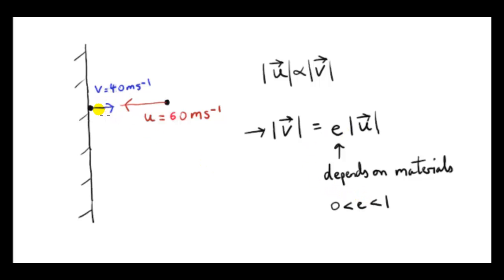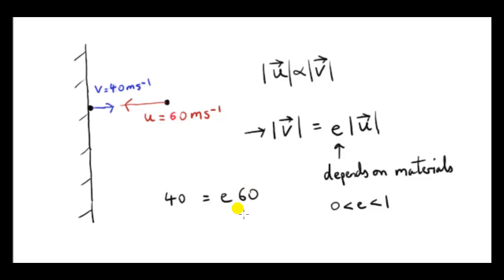Since the speed v is always less than the initial speed u, e must be a number that lies between 0 and 1. In our case, v is 40, equal to e times u which is 60, so e is 40 divided by 60, which is two-thirds. So the coefficient of restitution for the particle and the wall is two-thirds.